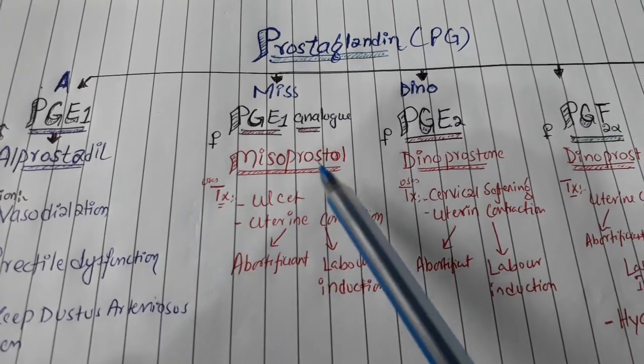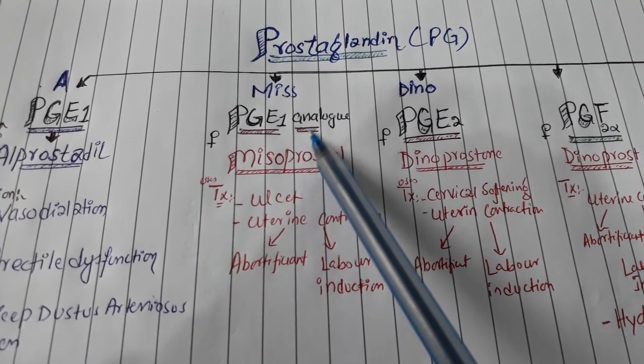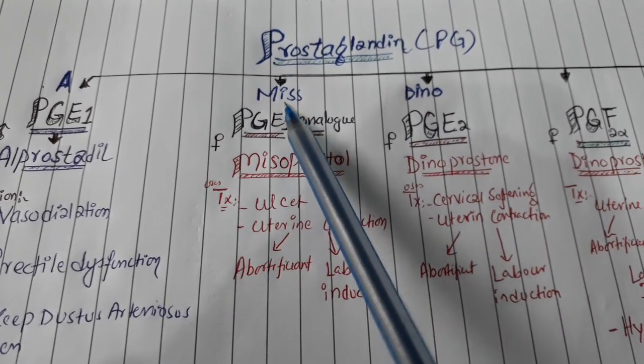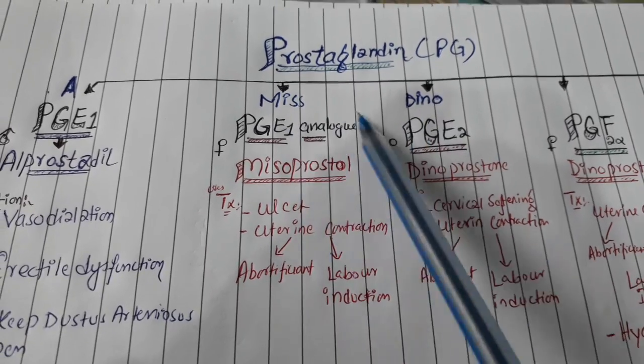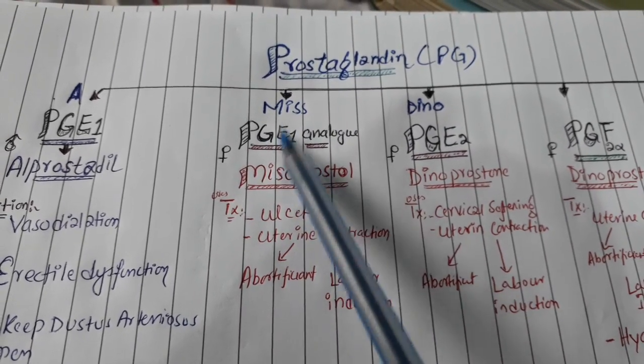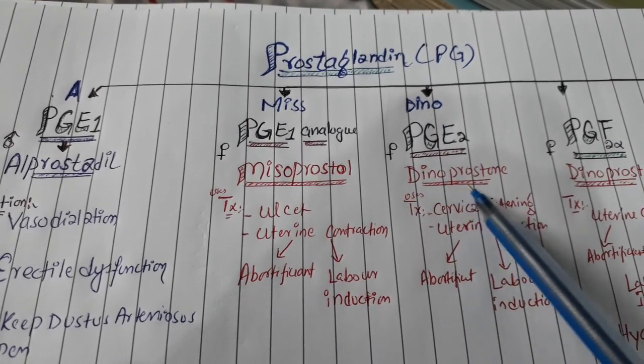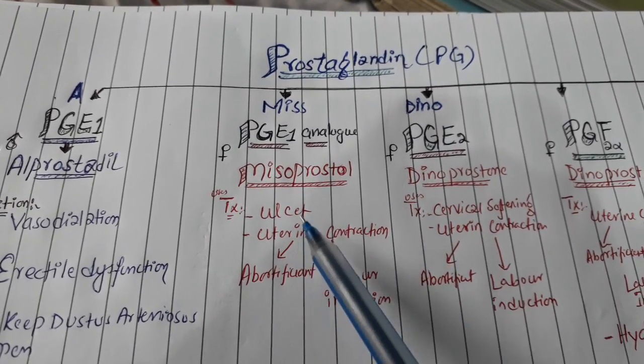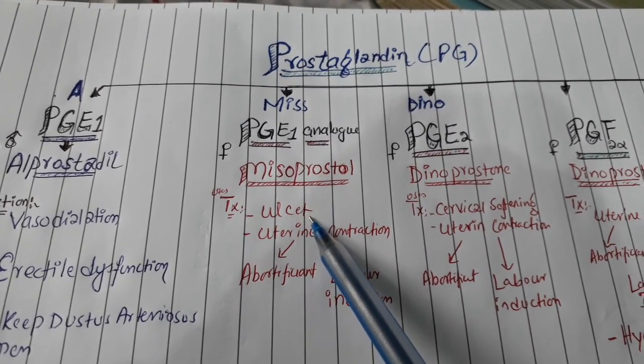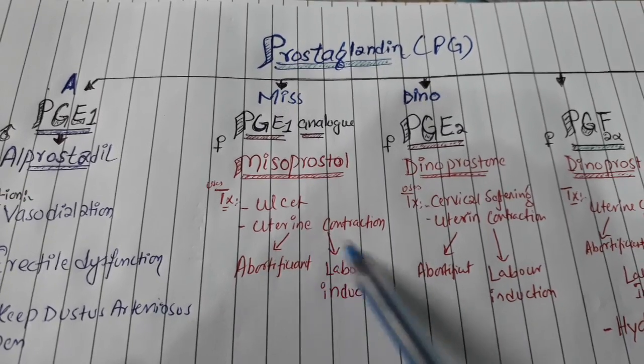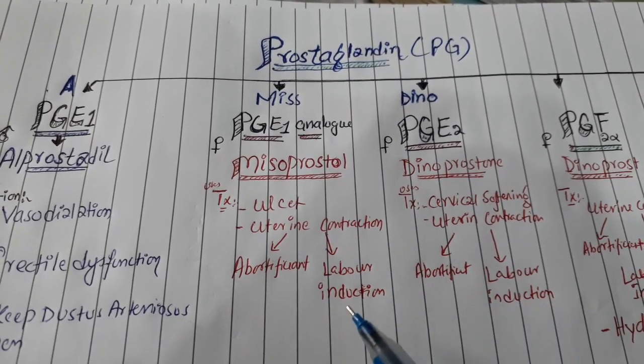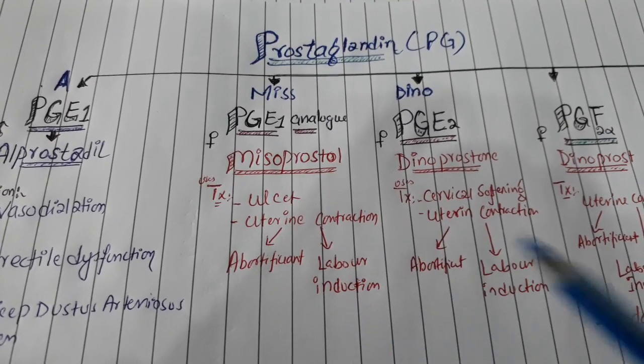Now the second and third one - first one was Prostaglandin E1. Now we will talk about Prostaglandin E1 analog and then we will talk about Prostaglandin E2. For this you will have to remember 'miss diano.' Misoprostol - 'miss' is for misoprostol and 'diano' is for dinoprostol. Both have similar functions, but misoprostol can also be used for gastric or duodenal ulcer, and both of these have a function in uterine contraction so it could be used for abortion or labor induction.